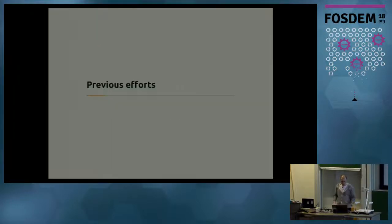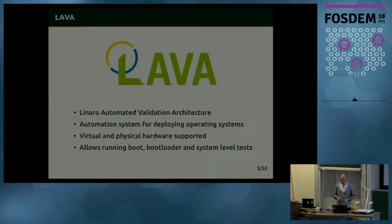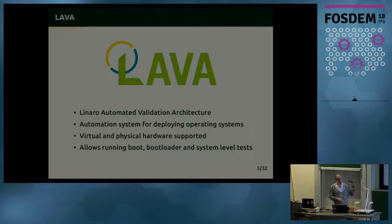With all that in mind, we decided to create this. But before it was produced, there were some previous efforts. The most notable one is Lava — Linear Automated Validation Architecture — which aims to automate deployments of operating system images on both virtual and physical devices, and allows running a wide range of tests on those devices. However, there are some use cases — for example, ours — involving interactive access to the device under test that are not yet very well supported in Lava, although there are attempts, like the built-in hacker session mechanism or the Lava Ball project by Free Electrons.